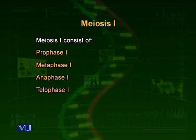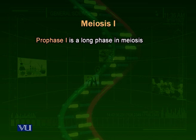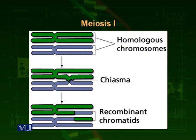Now we look at the detailed process of meiosis. Meiosis 1 consists of prophase, metaphase, anaphase, and telophase. In prophase 1, just like mitosis, the chromosomes are already duplicated, meaning every chromosome has two sister chromatids. As shown in the diagram, there are two homologous chromosomes. Each homolog consists of two sister chromatids — one shown in green and the other in blue. The green one is one homolog that is duplicated, and the blue one is its homologous partner, also consisting of two sister chromatids.